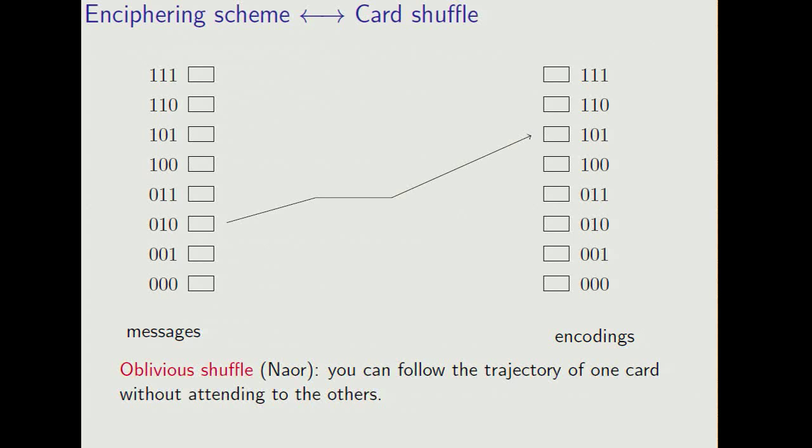Now, our enciphering scheme is based on the card shuffle, so let me say a few words about how you can think of a card shuffle and an enciphering scheme as corresponding to one another. So suppose we have a method of shuffling cards. Here I've drawn eight cards. Label the positions as binary numbers, going from 0, 0, 0 to 1, 1, 1.